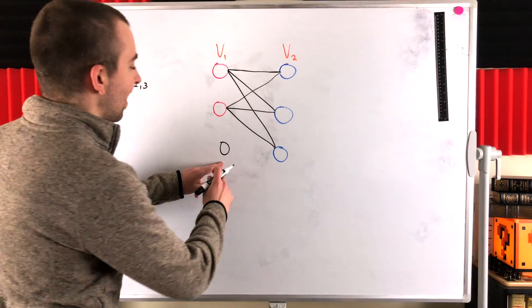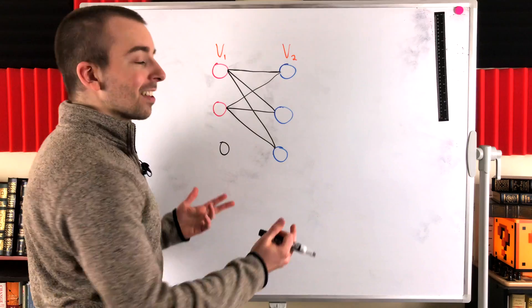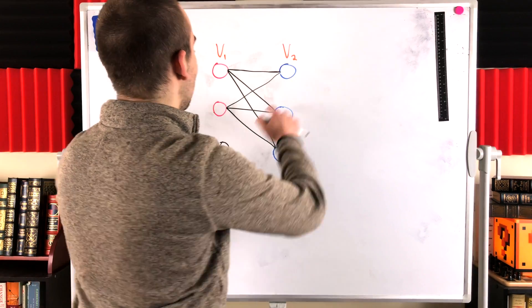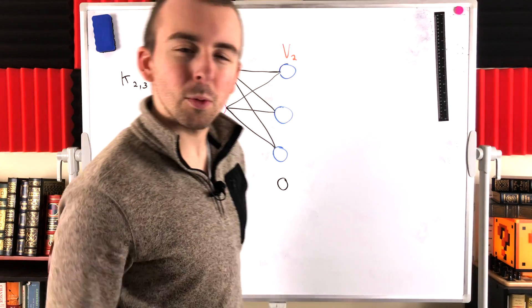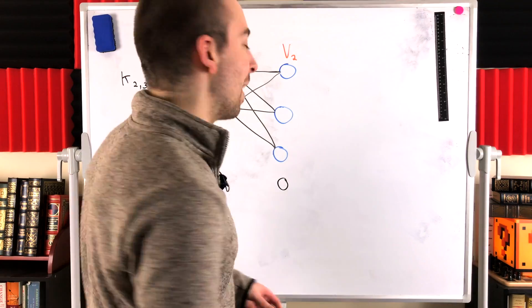Whatever partite set we try to put this in, if we want it to be a complete bipartite graph, the vertex has to have neighbors. It has to be adjacent to the vertices that are in the other partite set. Whichever one we choose to put it in, we'll see, nope, neither one works. Neither one affirms our hope that it's a complete bipartite graph.